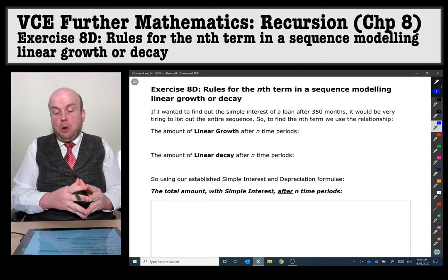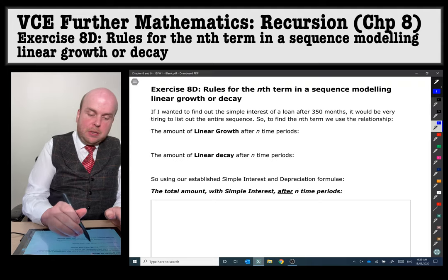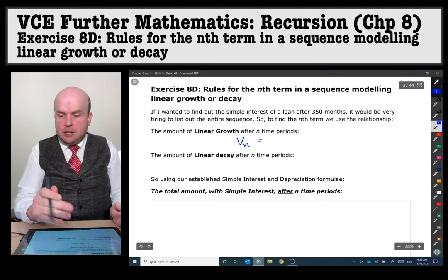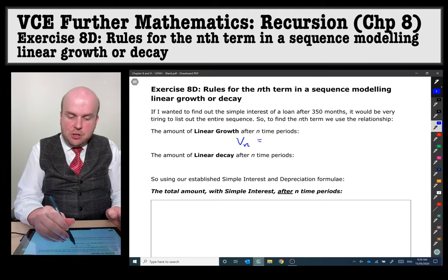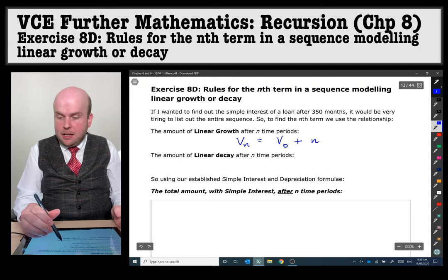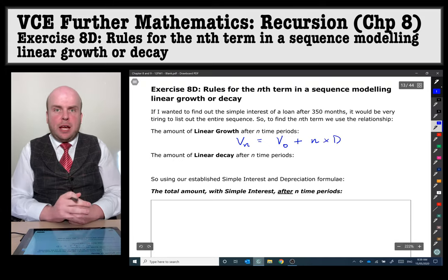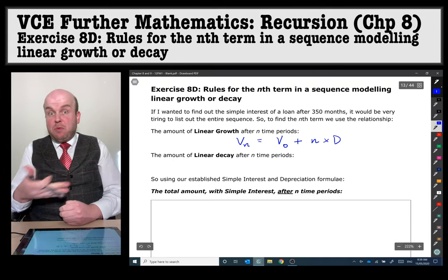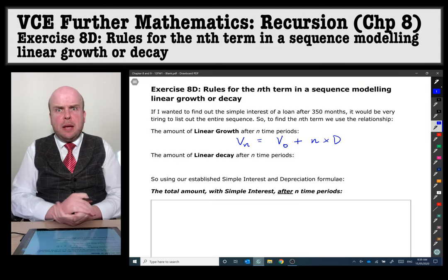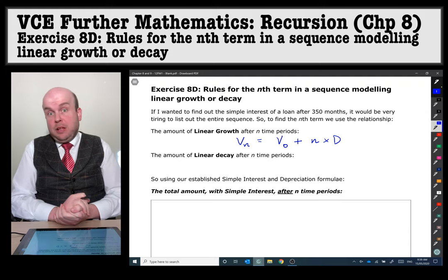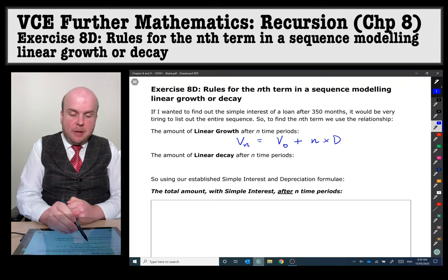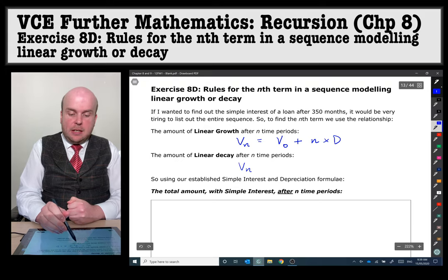If the loan is growing we will say Vn, so a particular nth term, is equal to the initial plus however many months, that's what we symbolize with n, times by the payments or the regular simple interest payment. With decay, if decay means decrease, then we're just going to decrease that by the same thing, same number of months multiplied by a d value.